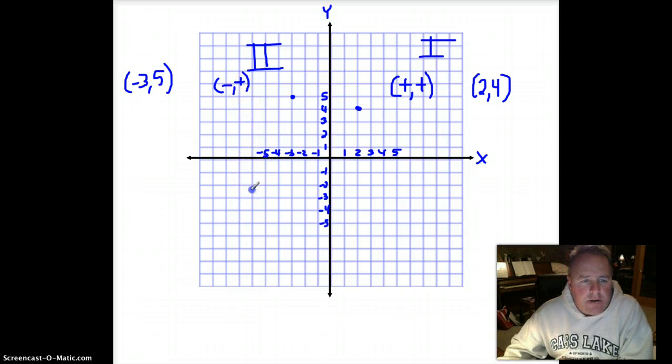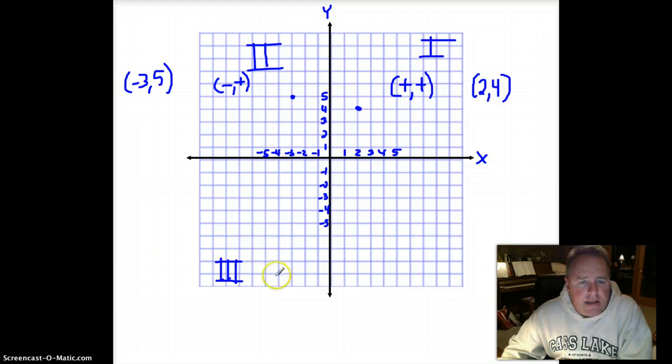Then we move down here to quadrant number three. I'm going to erase that. I'm going to move that down here. This is quadrant three. Quadrant three is going to have what we call a negative, negative ordered pair. For example, a negative two, negative three.